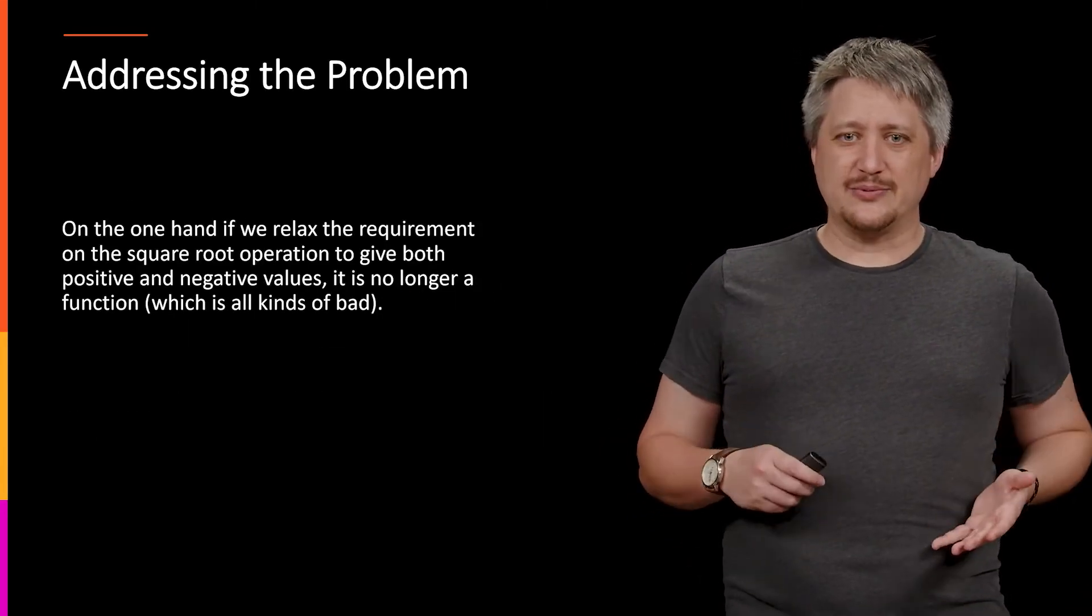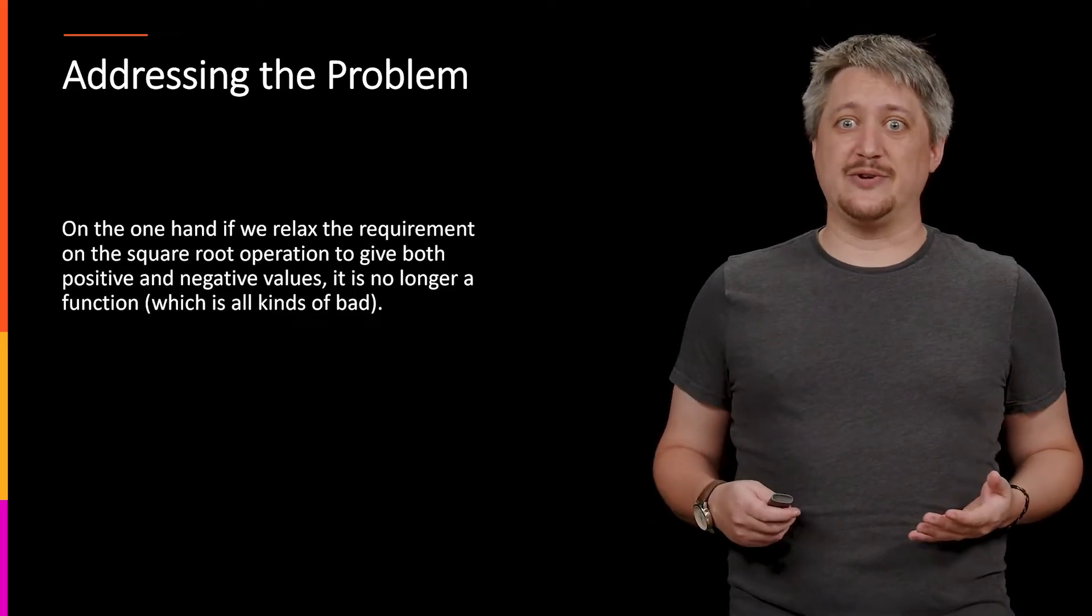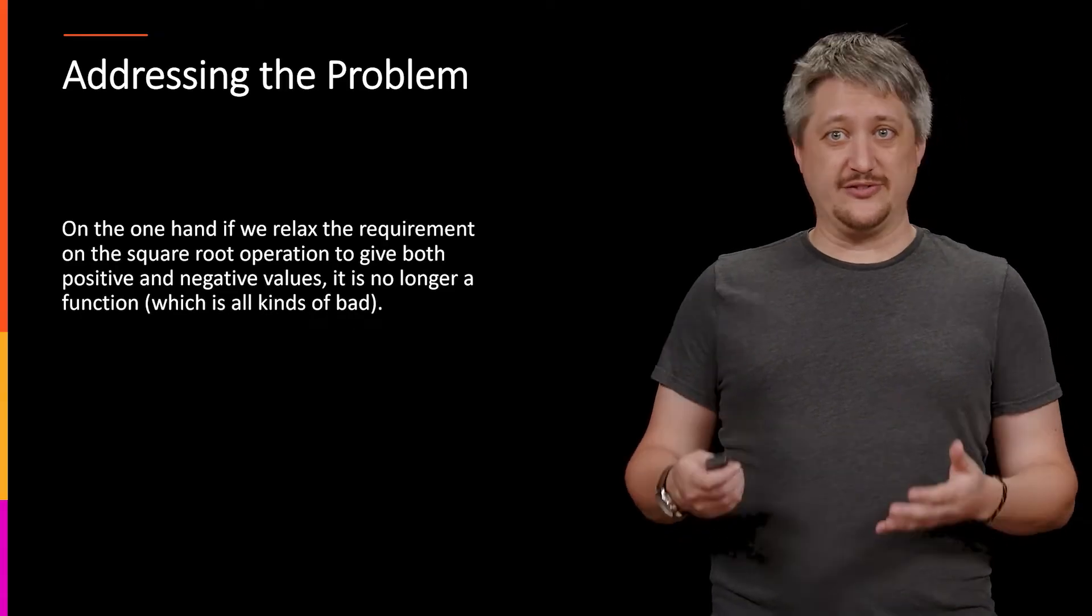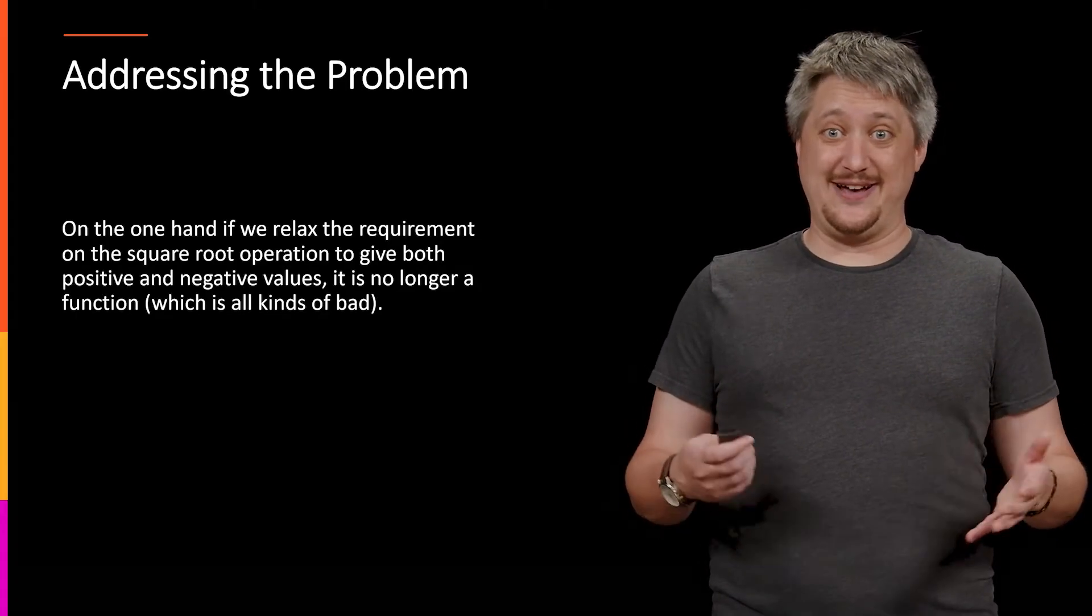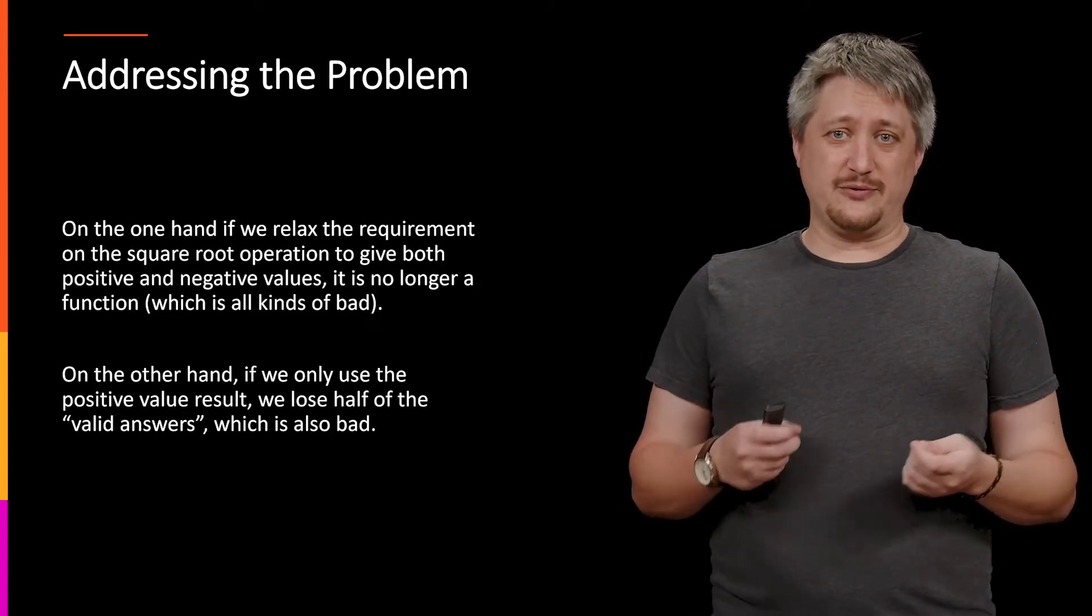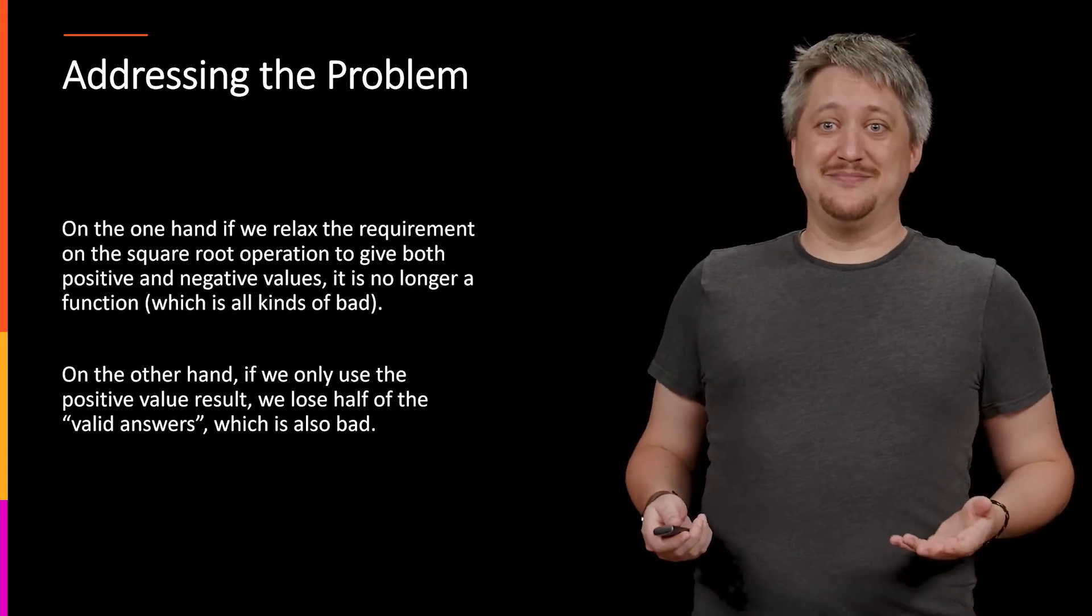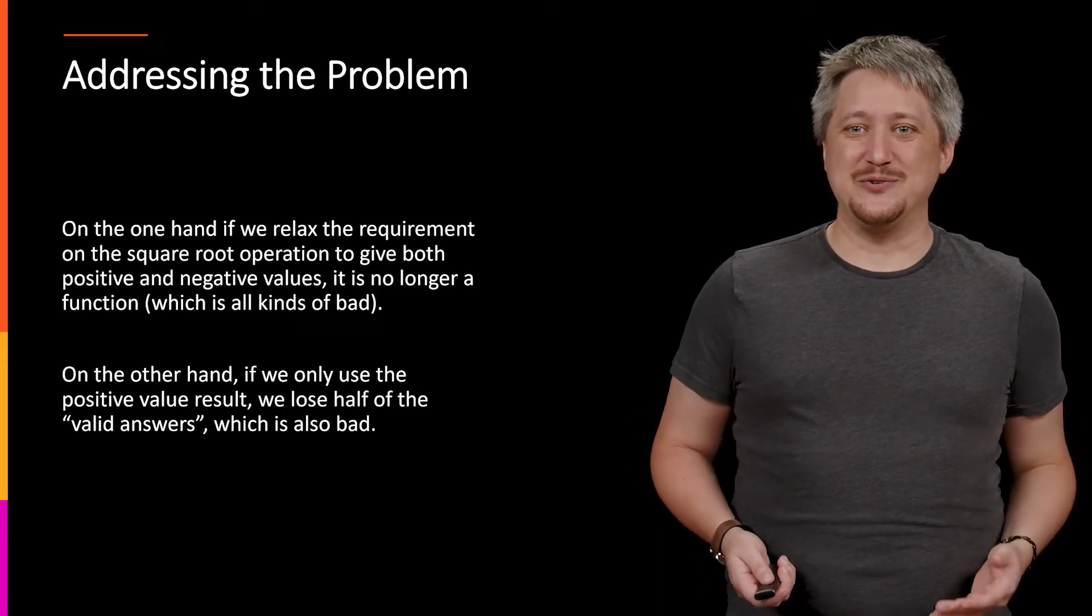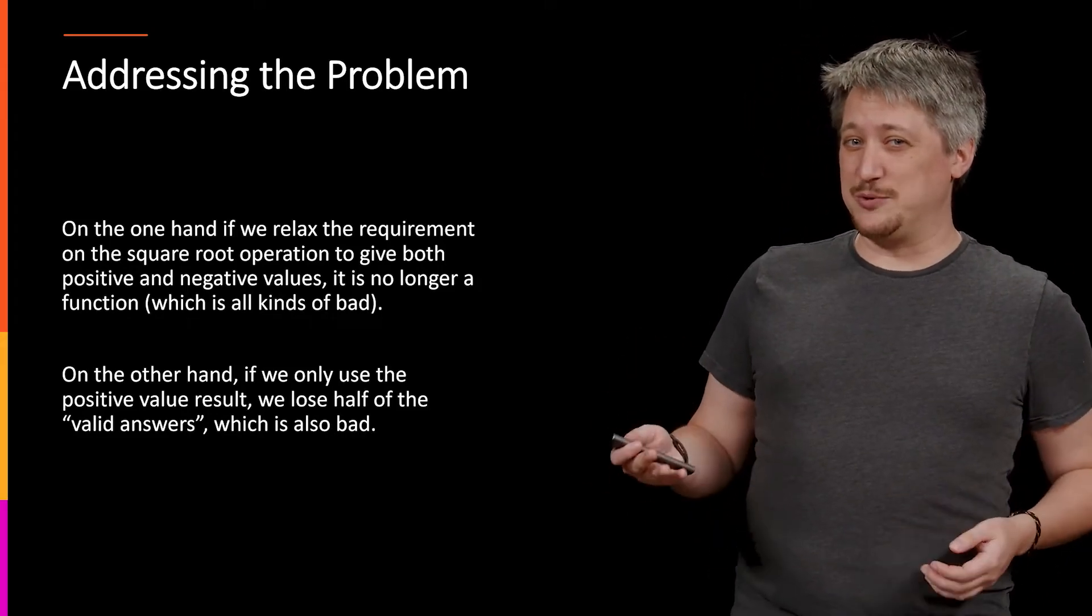Now, the reason for this is that on the one hand, if we relax the requirement that the square root only has one output, we allow it to say okay it can have a positive and a negative answer, so the square root of four is positive two and negative two. Well, if we do that, we no longer have functions, which means all the stuff we talk about that works with functions doesn't work anymore, which is all kinds of bad. Lots of stuff that we take for granted would suddenly start breaking down, and the square root thing would be all kinds of a mess. On the flip side though, on the other hand, if we only use the positive result, if we use that convention and we only have the one output for the square root, that means when we use the square root to get our list of valid answers, we lose half of them. We don't have the negatives anymore. So we're losing half of the actual answers to the original question, which is also bad. So how do we deal with that? How do we reconcile this issue where on the one hand we kind of need it to only have one output, but on the other hand if it only has one output, we're losing a bunch of information.